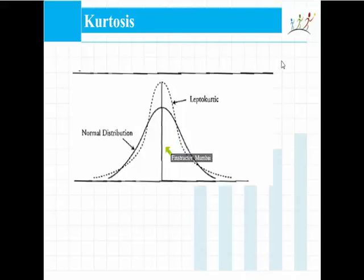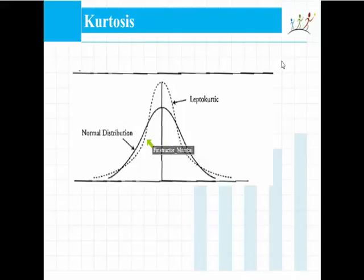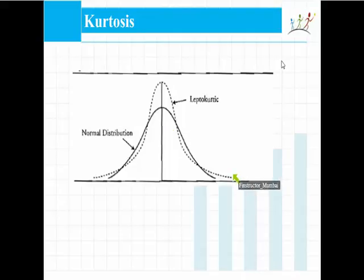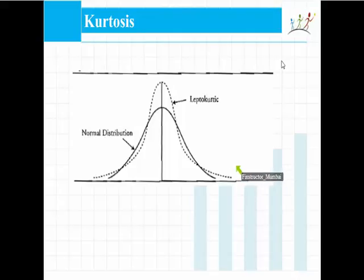There is one more concept called kurtosis. I will teach kurtosis once I teach the normal distribution, so in the next chapter on distributions we will study different distributions and understand kurtosis. Kurtosis deals with the peakedness around the mean and the fatness of the tails — how peaked a distribution is around the mean and how fat it is on the tails. We need to understand the normal distribution first before covering that concept.